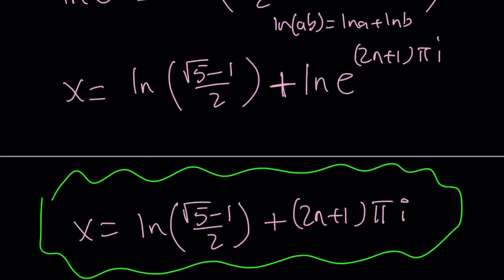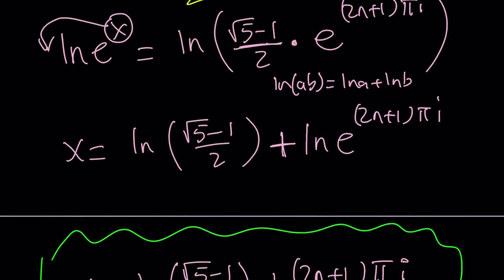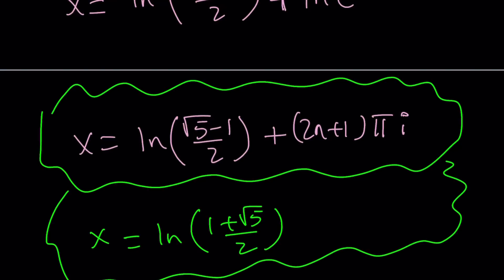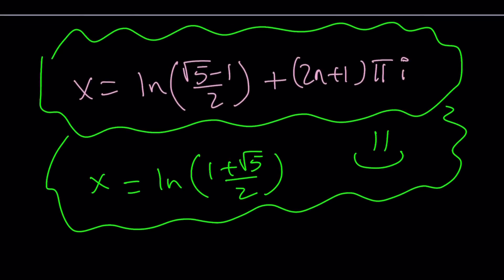And what was the other solution? x equals ln 1 plus root 5 over 2. There are two solutions. One is real. One is non-real. The other, e to the x equals 0 doesn't give us anything. As far as I know, if you do know something else, please let me know. And this brings us to the end of this video.